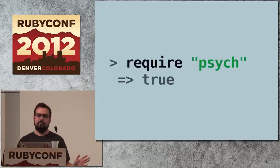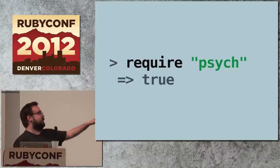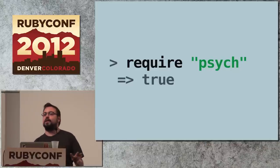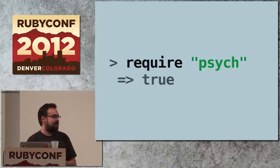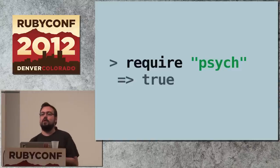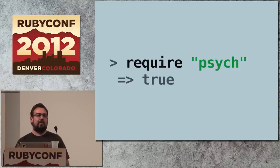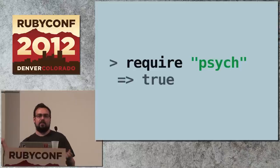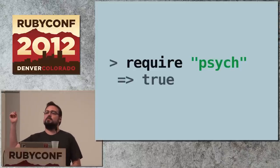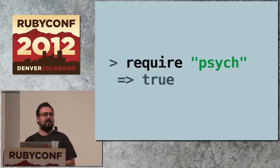Let's start with something simple: 'require psych.' In between those two lines there's a lot of stuff going on that you don't see. You require psych and you get back true and now you have a psych parser. So what exactly is going on? How many people here know what dynamic linking or dynamic loading is, and how it differs from static linking or static loading? About half the room — that's already a good step.